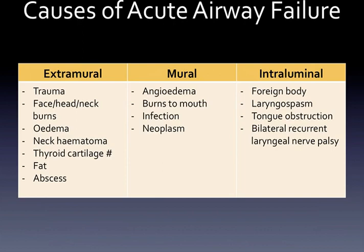Let's consider some causes of acute airway failure. Thinking of the airway as a tube, we apply the algorithm of extramural, mural, and intraluminal causes. Extramural causes include trauma to the face, head, neck, and burns around the airway; angioedema or anaphylaxis; neck hematomas — which can occur after thyroid surgery, which is why we keep a thyroid kit bedside to split the wound if needed; thyroid cartilage fractures; obesity with fat or large necks; and abscesses.